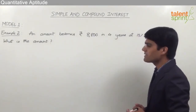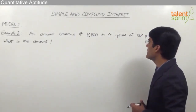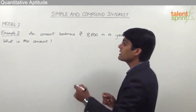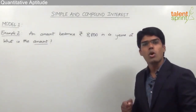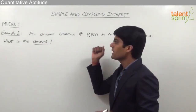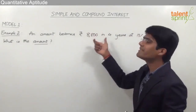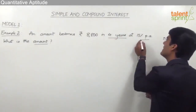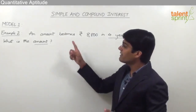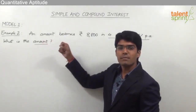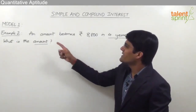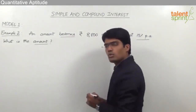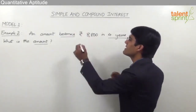The question is: an amount becomes rupees 8,800 in four years at 15% per annum. What is the amount? We first need to decide what amount is being asked about — is it the principal amount or the total amount? Whenever the word 'becomes' is used, the value which follows 'becomes' is always the total amount.